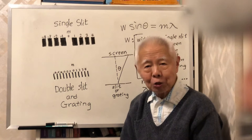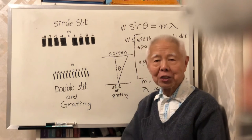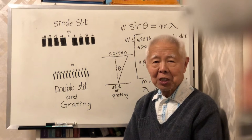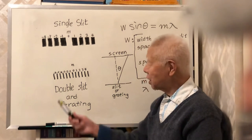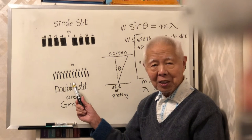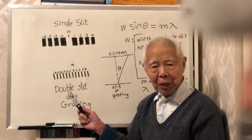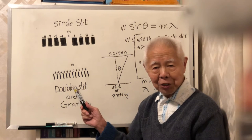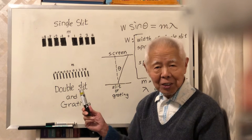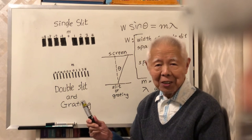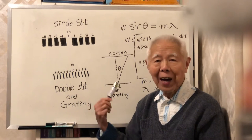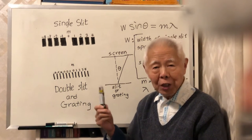If you have a double slit — a two-slit interference fringe — then the pattern is different. The bright space and the dark space are equally spaced. The center bright is not wider than the bright space on the two sides. They are equal; the widths are equal.